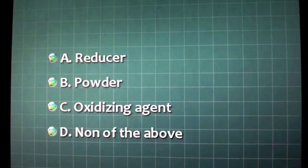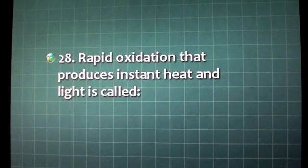Hydrogen peroxide is: A. A reducer, B. A powder, C. Oxidizing agent, D. None of the above.